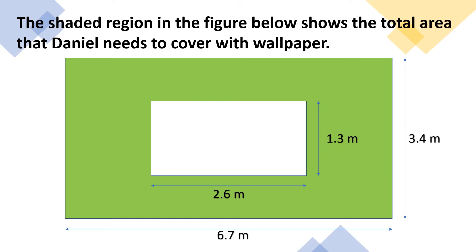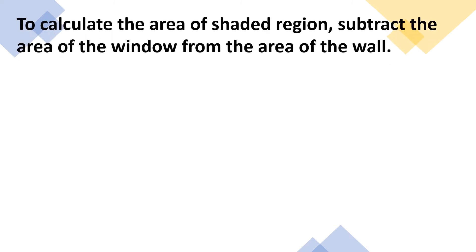The shaded region in the figure below shows the total area that Daniel needs to cover with wallpaper. The total area of the wall has 6.7 meters length and 3.4 meters wide. The total area of the window has 2.6 meters length and 1.3 meters wide. To calculate the area of the shaded region, subtract the area of the window from the area of the wall.